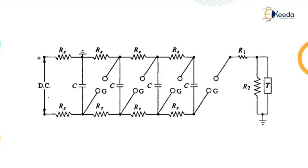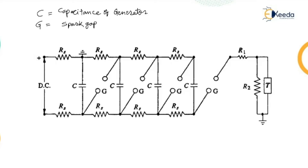Let us take this particular diagram where the DC supply is available. There are certain elements to note: CC is the capacitance of the generator, and G is the spark gap.